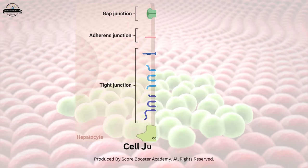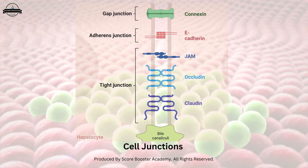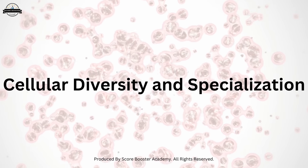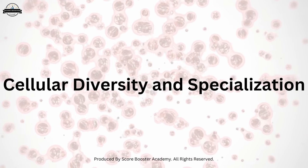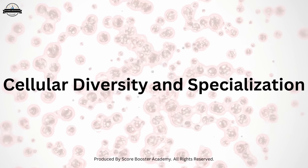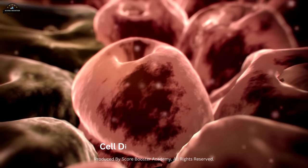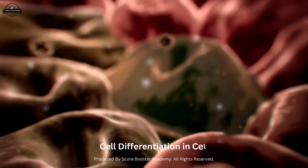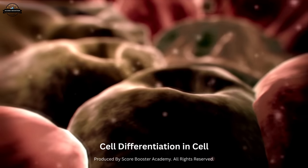Examples of cell junctions include tight junctions, adherence junctions, desmosomes, and gap junctions. Through the process of cell differentiation, cells acquire specific structures and functions to perform specialized roles.